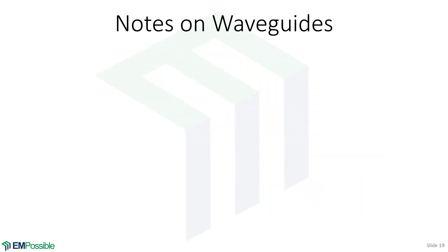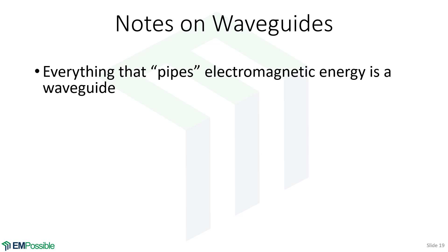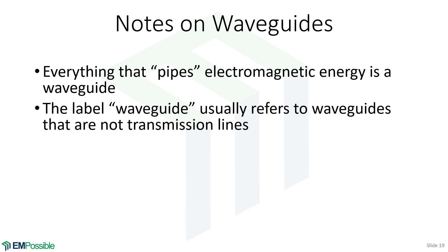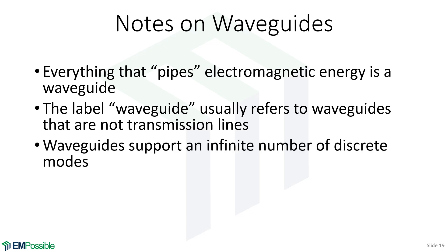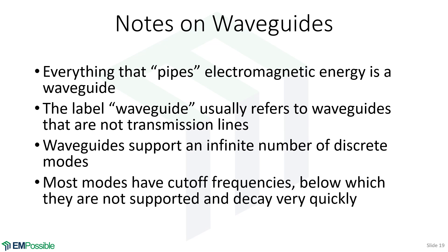Some basic notes on waveguides to finish. Anything that pipes electromagnetic energy to limit its radiation can be considered a waveguide. When we say waveguide, this tends to refer to types that are not transmission lines. Waveguides support an infinite number of discrete modes — infinite because you can always go to a higher frequency and see more modes. Most modes have cutoff frequencies, below which that mode ceases to be supported. Exceptions include the TEM mode in a transmission line and the fundamental mode in a symmetric dielectric waveguide.